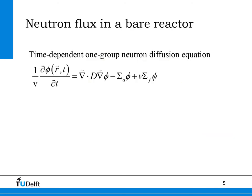To derive the so-called point kinetics equations, we start with a one-group time-dependent neutron diffusion equation for a neutron flux phi. The V on the left-hand side is the neutron velocity. The first term on the right-hand side is the neutron leakage rate in diffusion theory with capital D, the neutron diffusion coefficient. The second term is a neutron absorption rate with sigma A, the macroscopic absorption cross-section. The third term is a neutron production rate due to fission with sigma F, the macroscopic fission cross-section, and nu, the total number of neutrons per fission event. Note that nu is a sum of the prompt and delayed neutrons per fission.